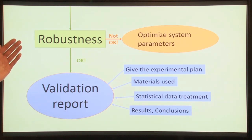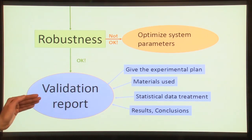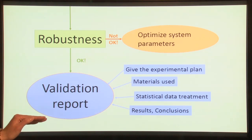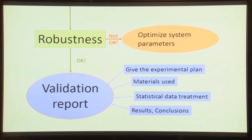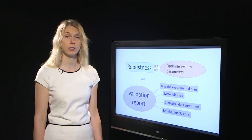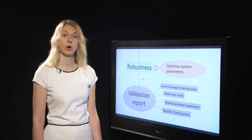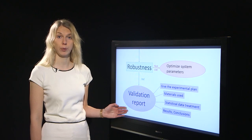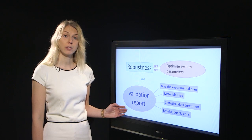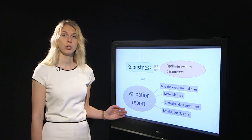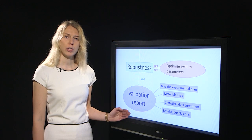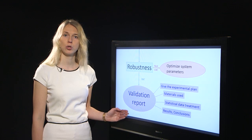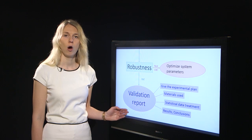If you have also found acceptable robustness, then you should conduct a validation report. This means writing down what experiments you carried out, what results you obtained, what statistical tests you did, and what you could conclude from these results. However, validation does not stop here. For the parameters that are most critical to your method, you should continue monitoring these parameters also during the routine use of your method.